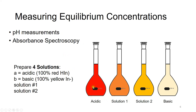In this experiment, we're going to prepare 100% acidic form (red color) and 100% basic form of methyl red (yellow color). We also have two other solutions which contain a mixture of the acidic and basic forms — that's why they look orange. One solution is more red, meaning it has more acidic form, while the other is more yellow, meaning it has more basic form.